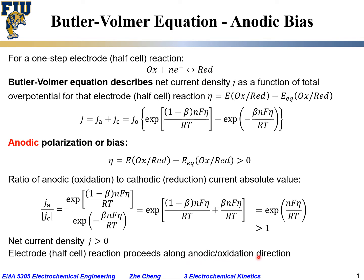The net current being greater than zero means the reaction proceeds in the anodic or oxidation direction — reduced species give out electrons and are oxidized into oxidized species. That is what happens under anodic polarization or a more positive bias condition: net anodic (oxidation) current flows, and the net reaction goes from reduced species to oxidized species.